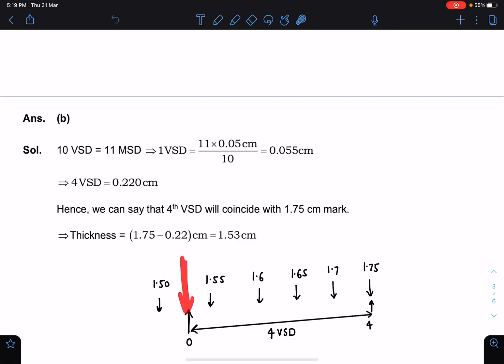So our correct reading will become, till this point we are going to get 1.75 minus 4 VSD. That is what we are doing here, and we are getting 1.53 centimeter as the answer.